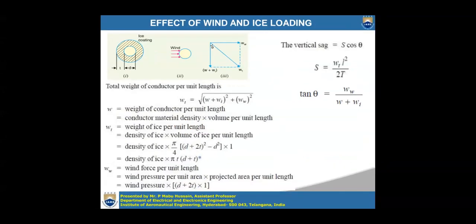When there is wind and ice loading on the transmission line, the total weight of the conductor will be a combined value. W is the weight of the conductor per unit length, Wi is the weight of ice per unit length, and Ww is the wind force per unit length — all in per unit length values, either per centimeter or per meter. The weight per unit length may be given directly, or sometimes the conductor material density and volume per unit length are given.